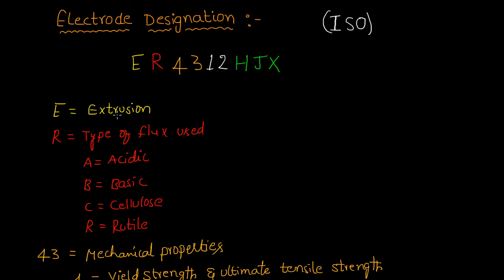The second letter indicates the type of flux used. If A is used, that is acidic flux. If B is used, that is basic flux. C is cellulose flux, and R is rutile flux. This refers to the covering of the electrode.